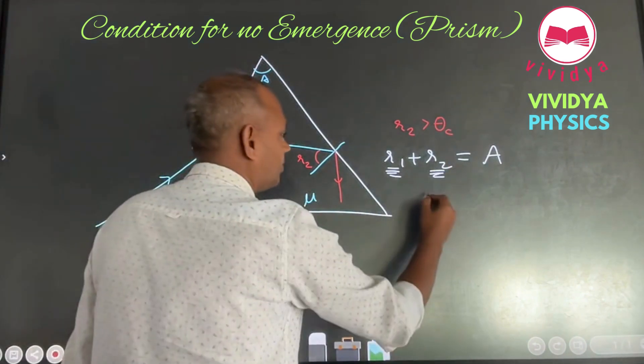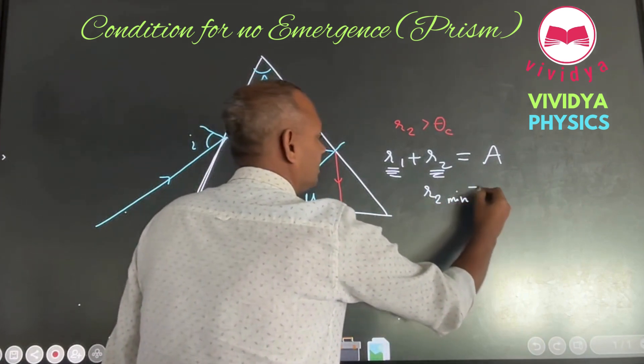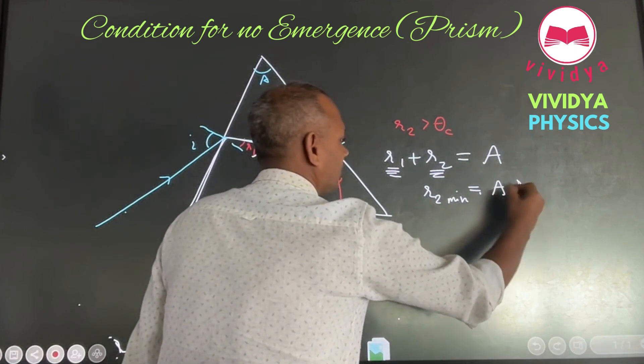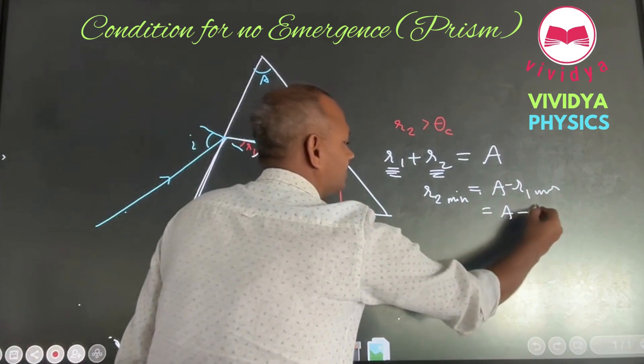What you do is that, this is R2. The R2 minimum value will be A minus R1's maximum value. Is that correct? Then this will be A minus theta C, correct?